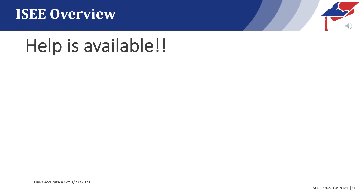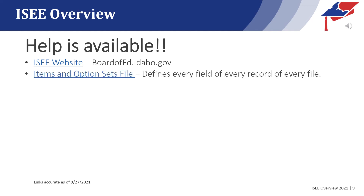IC reporting can be a daunting task. We encourage each LEA to develop a team to focus on the IC report each submission period. Help is available. The Board of Education IC website has a number of resources including manuals, schedules, lists, and templates to assist in the IC submission. Found on this website under the IC data collection files is the items and option sets file. This file contains the definition and description for each of the fields in the IC submission. We cannot overemphasize the importance of this file since it answers about 90% of the questions we receive.